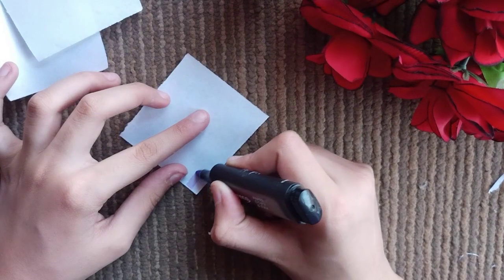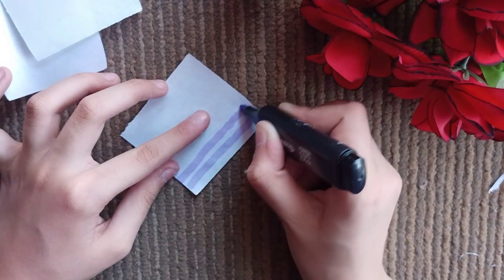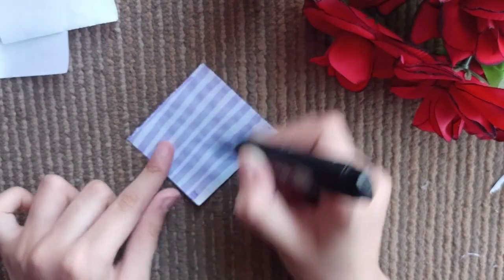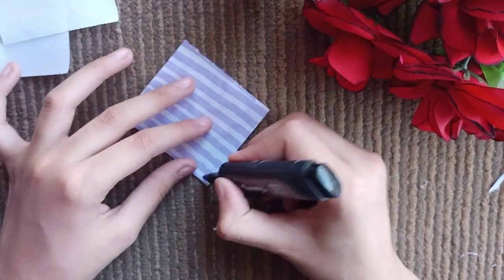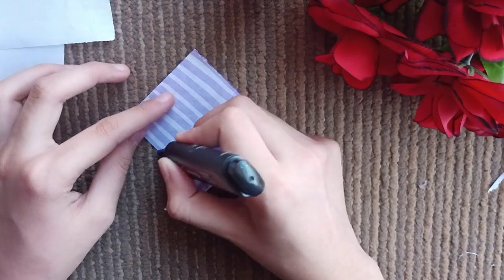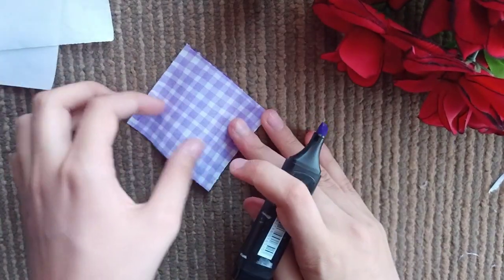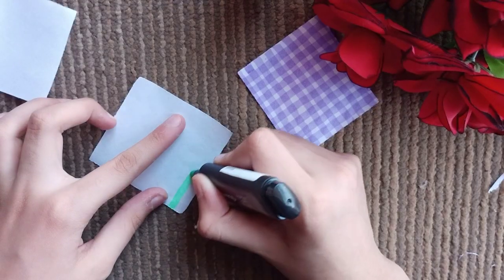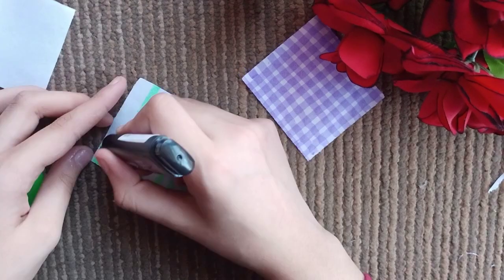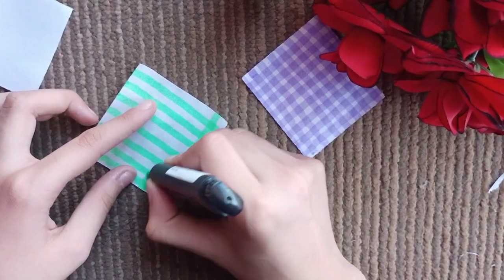Moving ahead towards the fourth DIY, I am making some pattern papers. For this I am using just some highlighter and all of these pattern papers are really easy to make. In this one I have just drawn some lines vertically and horizontally and it's ready.